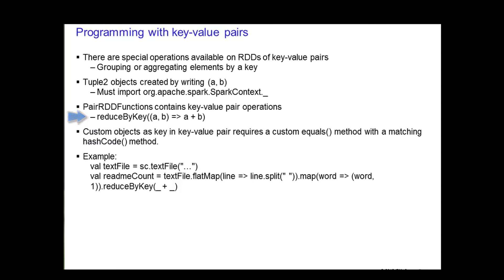In the example on the bottom of the slide, reduce by key underscore plus underscore uses the shorthand notation for an anonymous function taking two parameters, a and b in our case, and adding them together, or multiplying or any other operations for that matter.